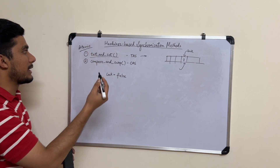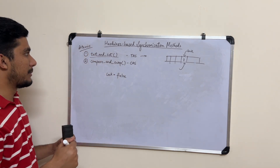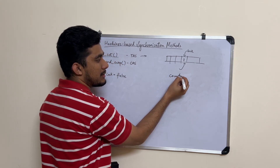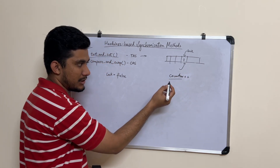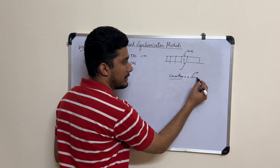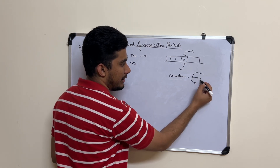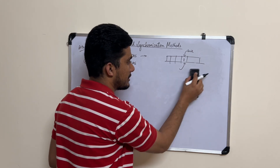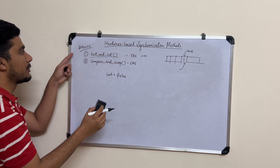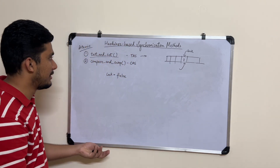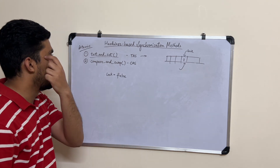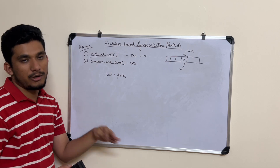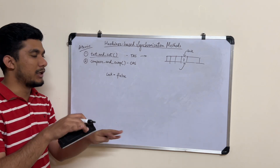Atomic means it is an indivisible operation. Counter++ was not atomic — it was internally divided into three operations: load, increment, and store. An atomic operation is something which will not be divided further. For example, load is an atomic operation. Test-and-set is an atomic operation, which means it will be done completely or not at all — there is no in-between.